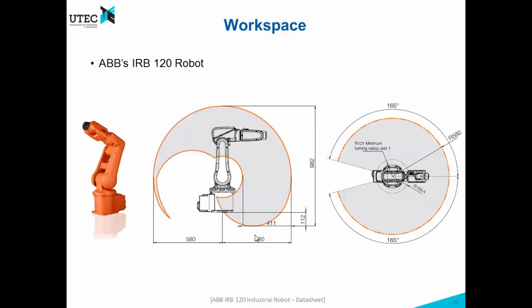In the previous part you saw that an important question is to know whether there exists a solution or not. In this picture what you see is a graph, and this graph represents all the points that the end effector can reach. For example, this is ABB's IRB robot, and this robot can reach each of these points. So there's a point within this area that will be reachable by the robot, but if there is a point outside of this area, the robot will not be able to reach it and there will not exist a solution for inverse kinematics.